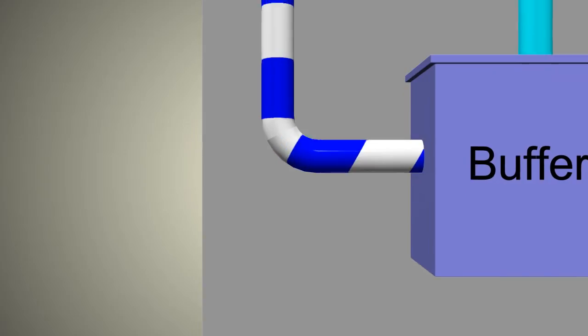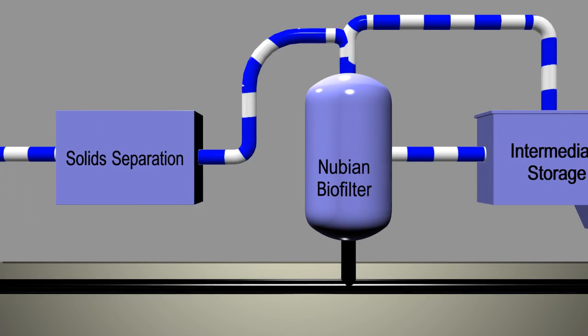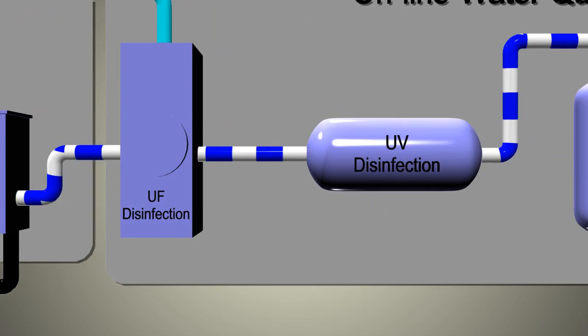Whether it arrives from the sky, via a pipe or is delivered by a truck, improving water sustainability involves three critical elements.